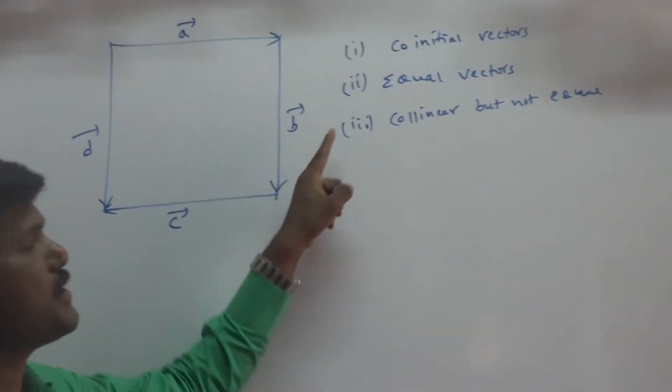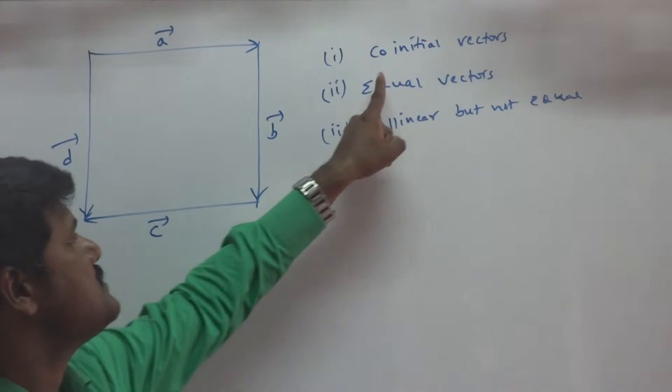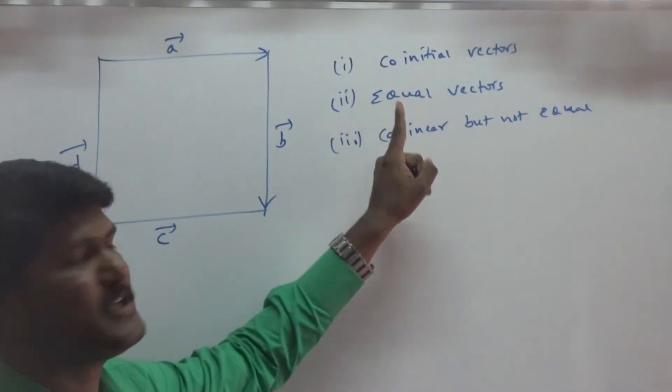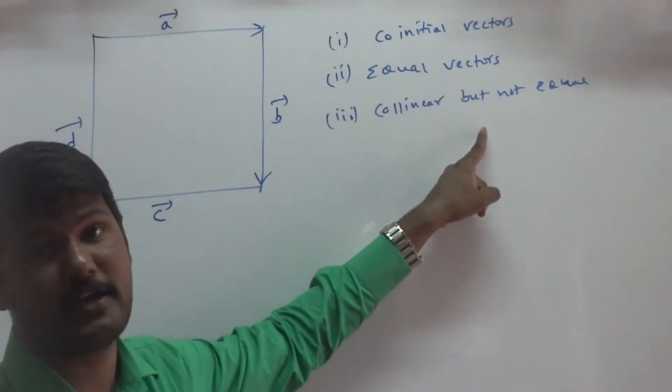This is a given diagram. They are asking three questions. Say what are co-initial vectors, what are equal vectors, and what are collinear but not equal.